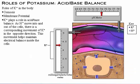Potassium also plays a role in acid-base balance. As hydrogen ions move into and out of the cells in the body, there is a corresponding movement of potassium in the opposite direction by ion transport proteins that link hydrogen ion movement to potassium ion movement. This movement helps maintain electrical balance inside the cells.